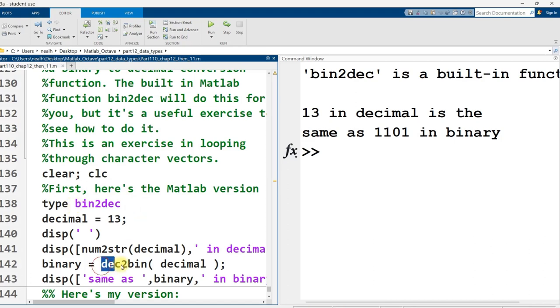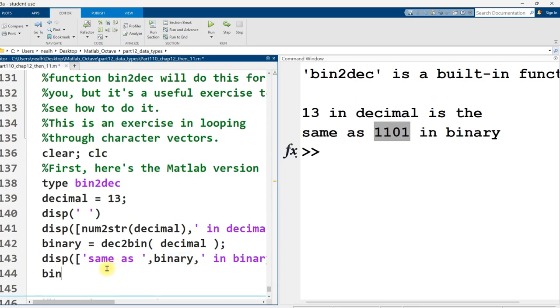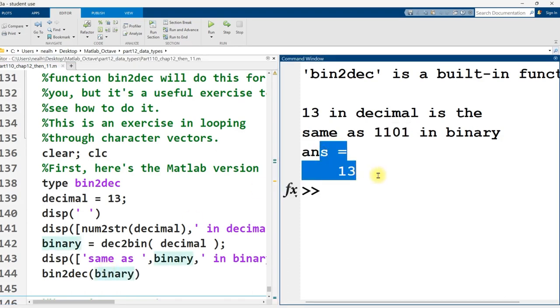Or rather, a different function, this function, dec2bin, will translate from decimal to binary. So I take the 13, display it out as binary. There it is right there, 1101. And then I might as well take that and plug it into the bin2dec function just to show that that also works. Right, and so there's the 13 again.